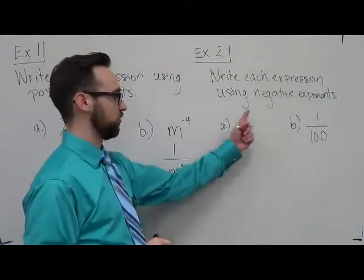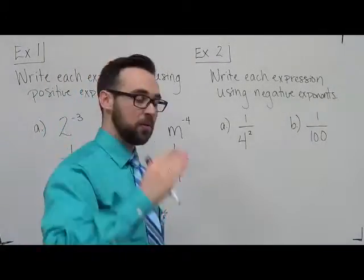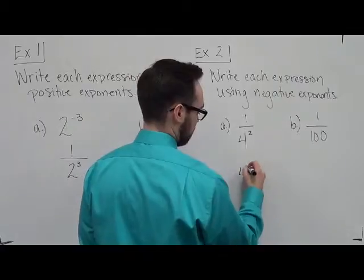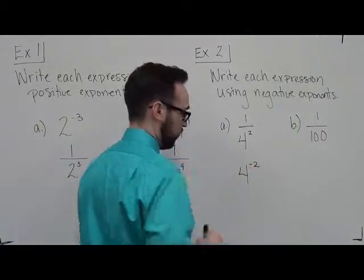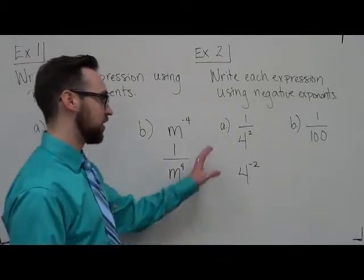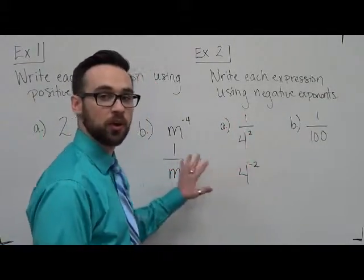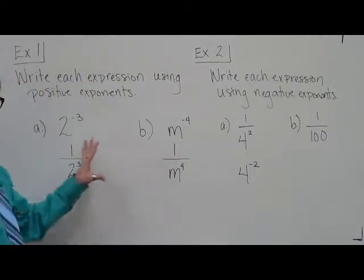So this one's pretty straightforward. It's one over 4 squared. So if I take it out of the denominator, it now makes it 4 to the negative 2 power. So everything stays the same about it, except we move it back up top, and we make this negative. So we're just going opposite of what we did over on this side.